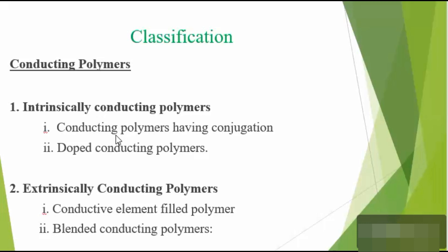The second type is doped conducting polymers. These polymers are prepared by a process called doping. It is the creation of positive centers or negative centers in the polymer backbone by oxidation or reduction process. The polymer obtained by doping is called a doped conducting polymer.